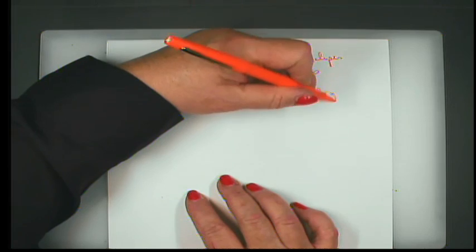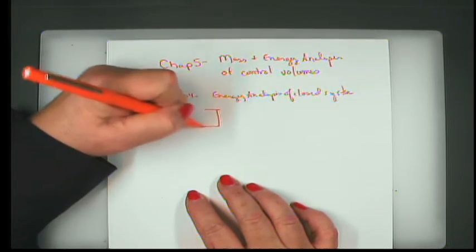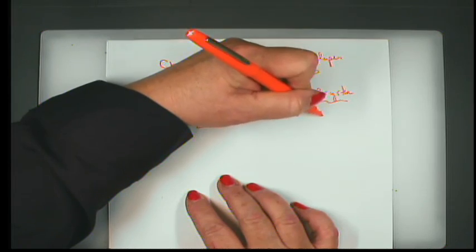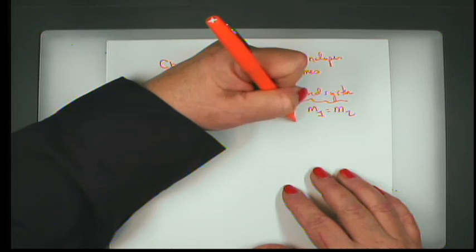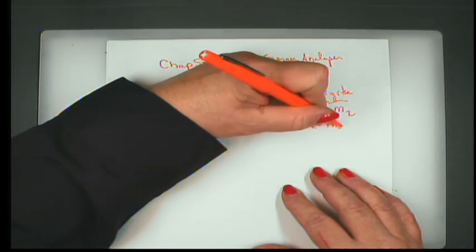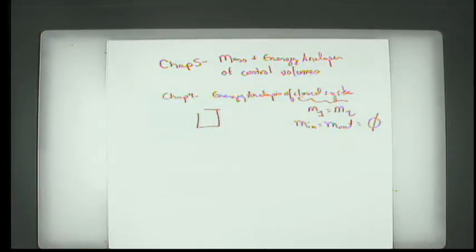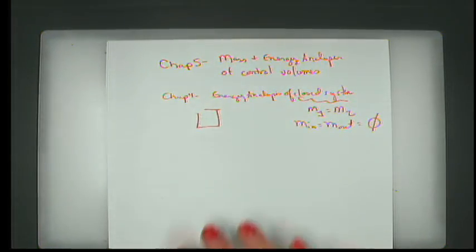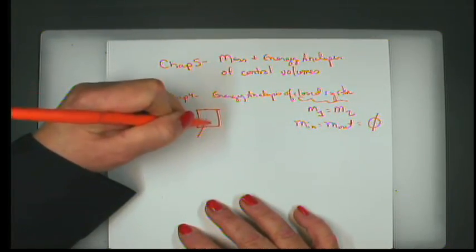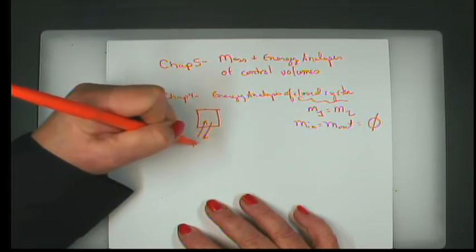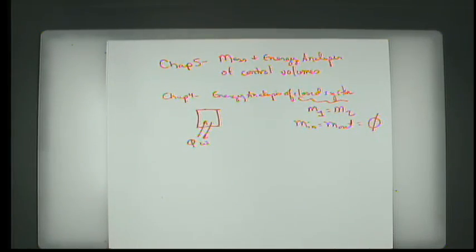If we have a closed system, that basically means that the mass at time 1 is equal to the mass at time 2, or the mass that goes in equals the mass that goes out, which equals zero. In other words, there is no mass passing in or out of a closed system — that is the definition of a closed system. The only way we can have energy transfer across the boundary is through heat or work, energy forms not associated with mass.